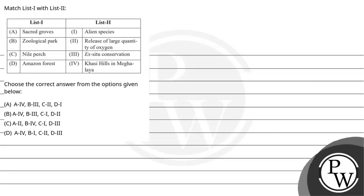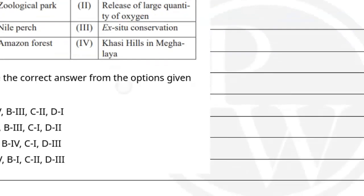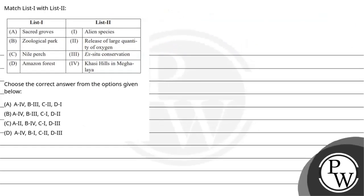This question says: match List One and List Two. List One has: A - Sacred Groves, B - Zoological Park, C - Nile Perch, D - Amazon Forest. List Two has: alien species, release of large quantity of oxygen, ex situ conservation, and Khasi Hills in Meghalaya. The options are: A) A4 B3 C2 D1, B) A4 B3 C1 D2, C) A2 B4 C1 D3, D) A4 B1 C2 D3.